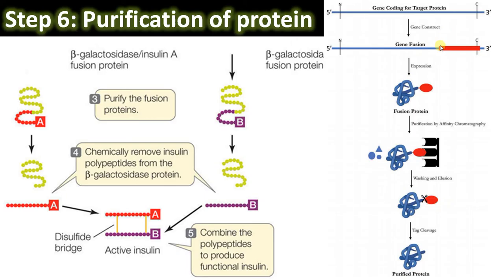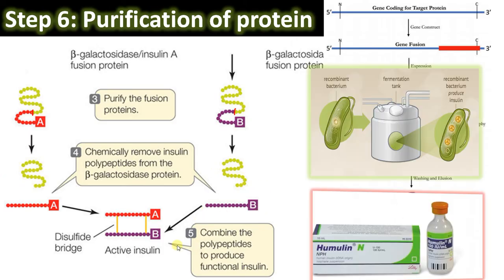The site between the beta-galactosidase and the insulin chain contains methionine residues. We use cyanogen bromide, which cleaves at methionine residues, to separate the insulin from the tag. This gives us the purified A chain and B chain separately from their respective cultures. The final step is mixing this purified A chain and B chain together in vitro under appropriate conditions to form the disulfide bond, finally producing the active insulin.